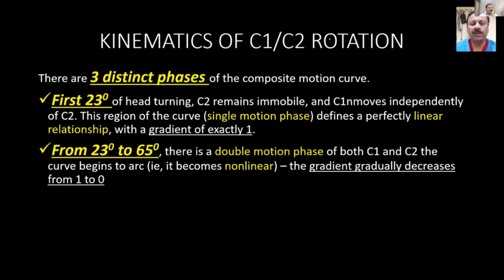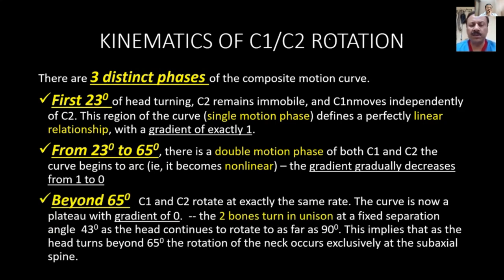If you plot the C1-C2 angle graph: in the initial first 23 degrees, the gradient is 1, meaning the C1-C2 angle increases proportionally with C1 movement. For the next 23 to 65 degrees, there is a double motion phase where the gradient gradually decreases from 1 to 0. Beyond 65 degrees, the two bones move in unison and can rotate up to 90 degrees, implying that rotation beyond 65 degrees occurs exclusively at the lower part of the spine.